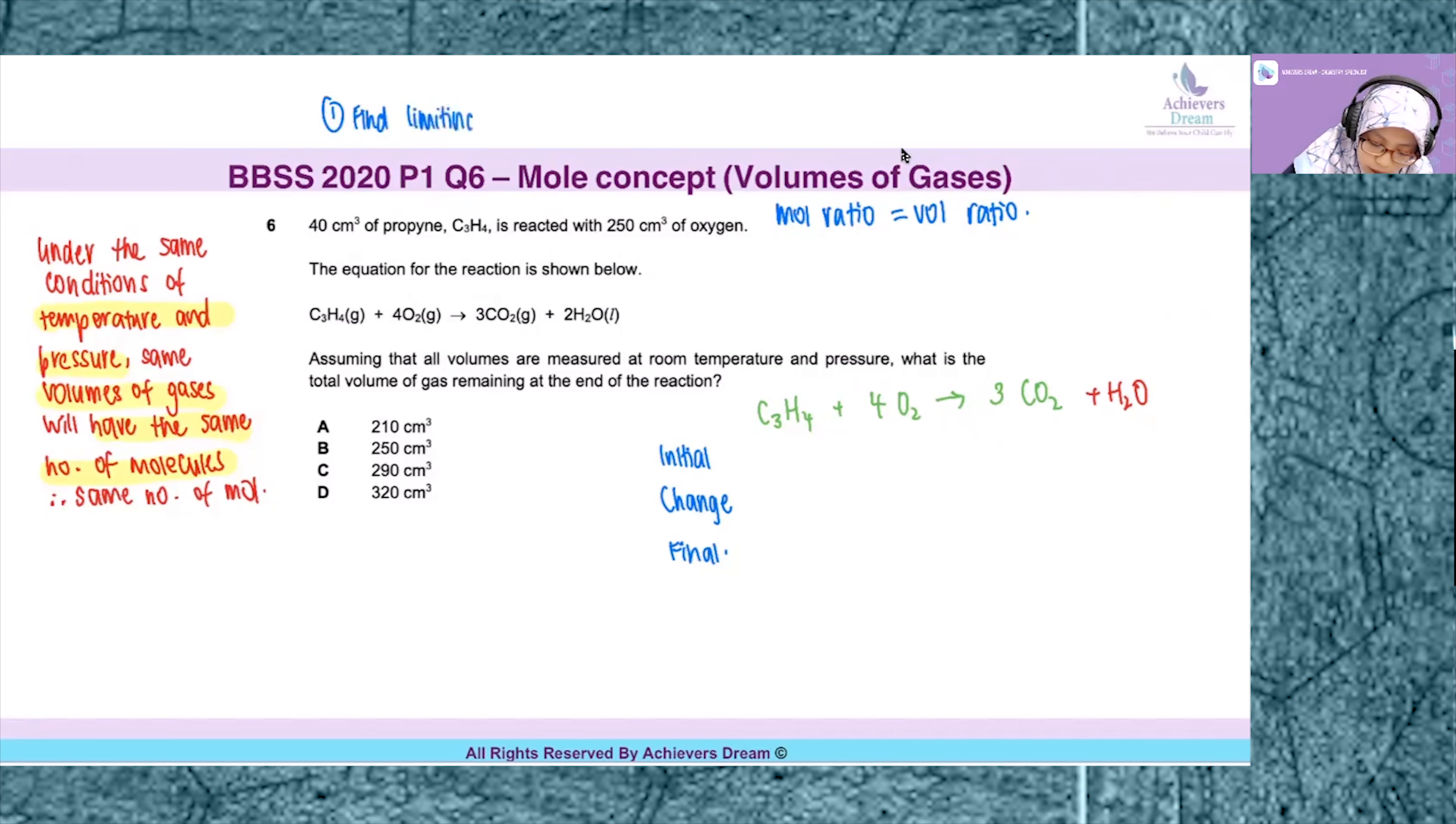Let me find the limiting reagent now. We have to compare C₃H₄ to O₂. The mole ratio is determined from the equation, so it is 1 to 4, propyne to oxygen. Now let's use the volume of propyne as our base to find the volume of oxygen needed for the reaction. If I have 40 cm³ of propyne, I will need 40 times 4, which is 160 cm³ of oxygen.